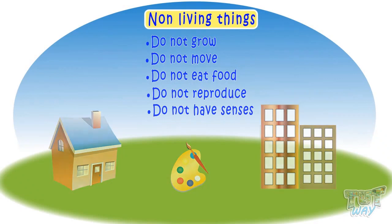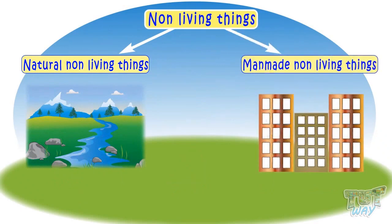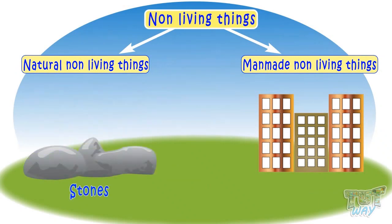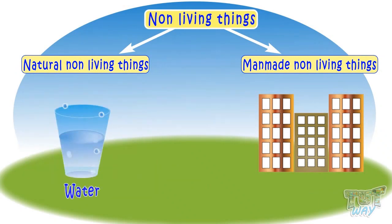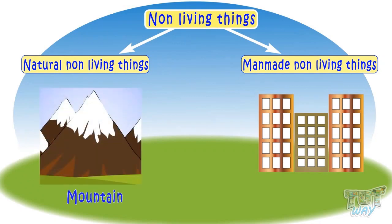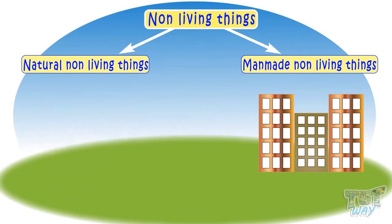Non-living things can be natural or man-made. Natural non-living things are things that exist in nature and man has not made them. Like stones, water, soil, mountain, river, clouds, rainbow — all these are non-living things.